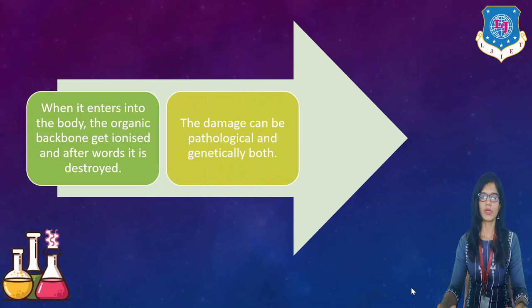So the damage can be pathological as well as genetically both. That damage will go up to generations. So if damage occurs in a parent then it will go to child, to grandchild, to grandchild's grandchild and to the next future generations. All of that generations will have certain damage in their body. Certain diseases are there. Certain type of organs are not present in their body.